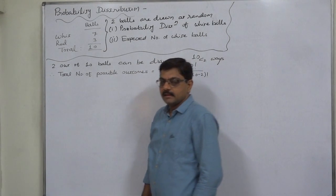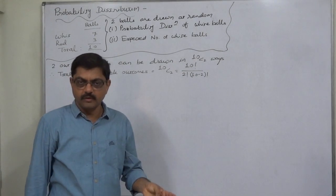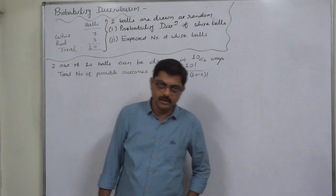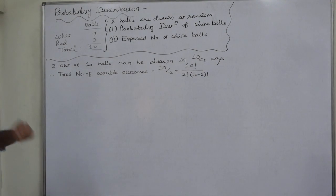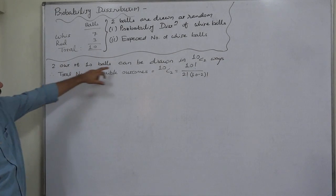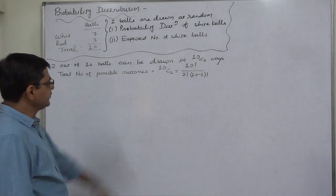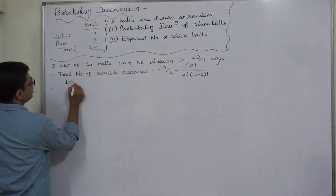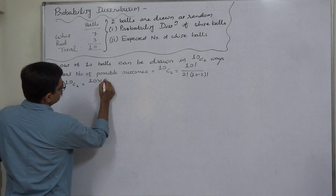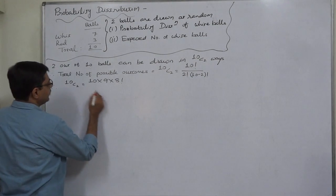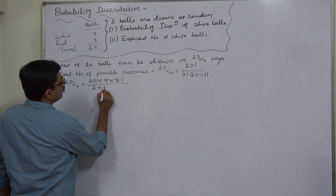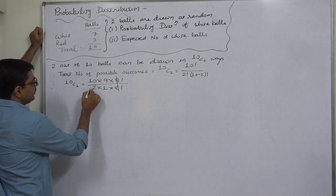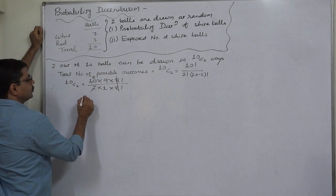there can be no white ball, one white ball (that means one white and one red), or two white balls. We have to find the probability of all three possible mutually exclusive and exhaustive outcomes. Two balls out of ten can be drawn in 10C2 ways. 10C2 equals 10 factorial divided by 2 factorial times 8 factorial, which gives 10 times 9 divided by 2, so 10C2 equals 45.